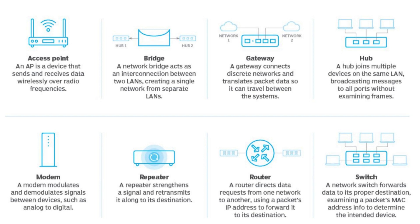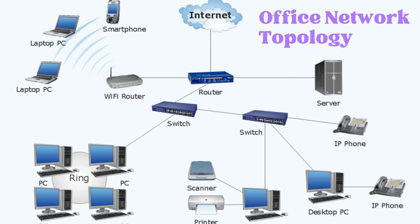Here you can see all major network components on a single screen with a brief definition of what each device does. Please read this for better understanding and to clarify the differences between bridge, gateway, hub, modem, repeater, router, switch, and others we just discussed. Network topology is defined as the physical arrangement through which various endpoints and links in an enterprise network communicate with each other — for example, a ring topology is shown on screen.